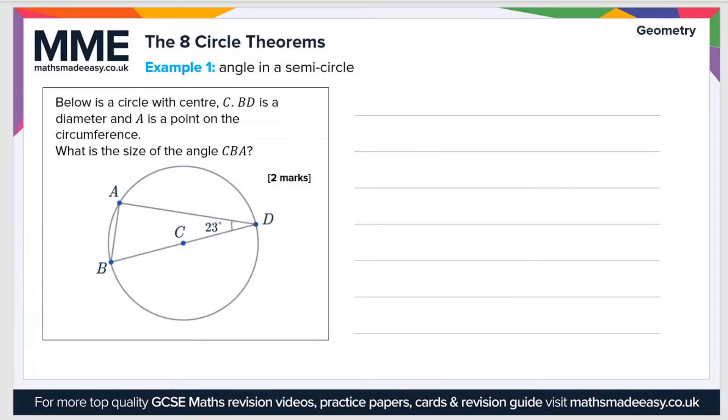Welcome to the Maths Made Easy tutorial on the eight circle theorems. We're just going to be looking at a couple of examples in this quick video. So example one, below is a circle with center C. BD, which is this line here, is a diameter.